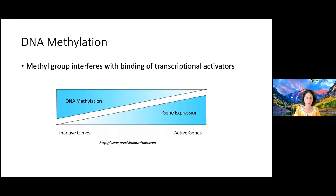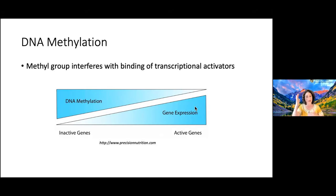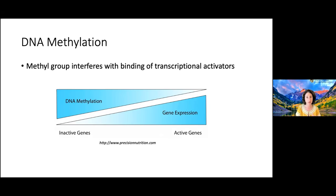When CpG islands are non-methylated, genes tend to be expressed — there's a negative relationship. The methyl group at the CpG tends to interfere with the binding of transcriptional activators. So you can see: more DNA methylation leads to more inactive chromatin and less gene expression, while low DNA methylation leads to more active gene expression. The expected relationship is this inverse one. It's not always true in data — there's lots of noise and other contributing factors — but that's the expected negative relationship, another take-home point.